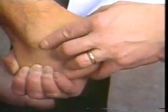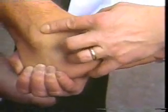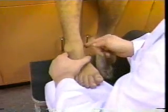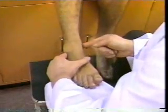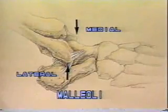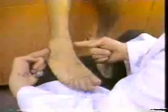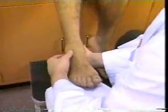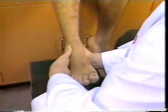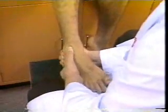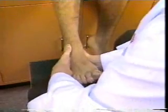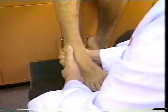The lateral malleolus, or distal end of the fibula, is then identified. The examiner should note that it extends farther distally than the medial malleolus and is also located more posteriorly. While the thumb is pressing anterior to the lateral malleolus, plantar flex the foot and the anterolateral aspect of the talar dome becomes palpable.